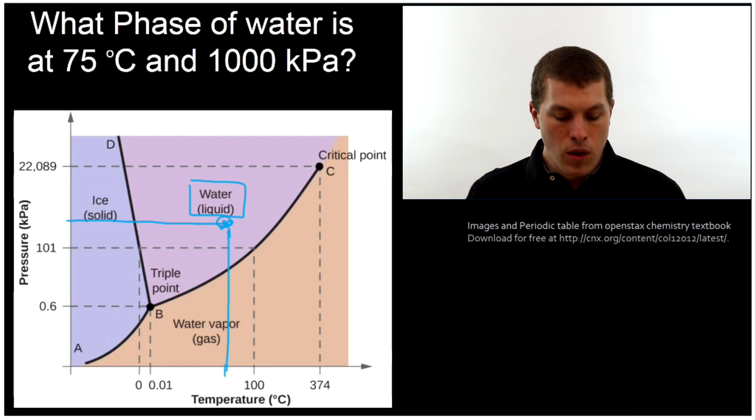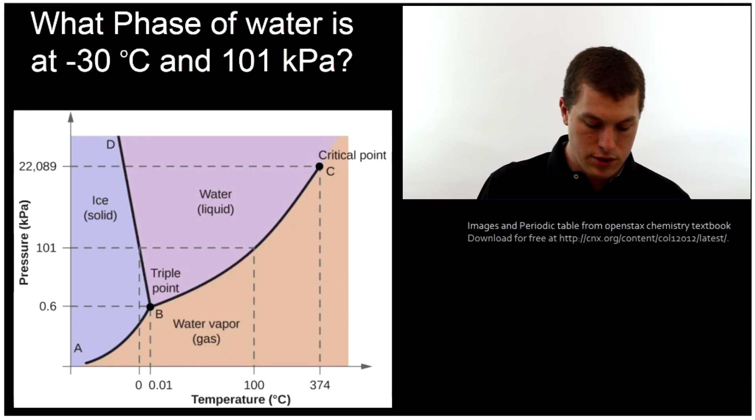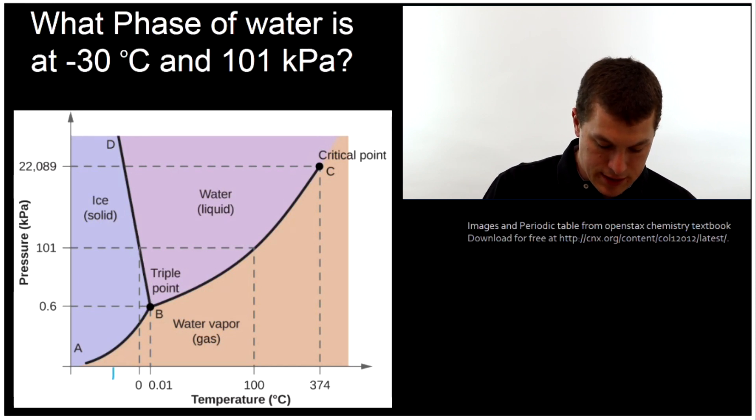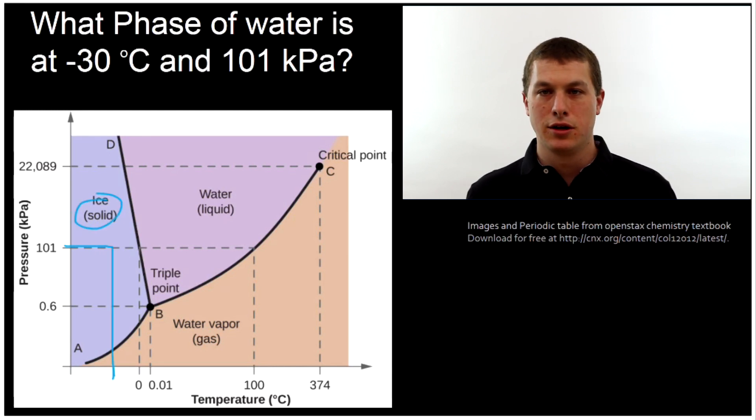All right, let's look at another one. What phase of water is present at minus 30 degrees Celsius and 101 kilopascals? Well, minus 30 degrees Celsius might be about there, and 101 kilopascals is there. And we see where those meet. Now we have solid. So this will tell us, like let's say you're going to a faraway planet and you want to know, am I going to have liquid water to drink? You can look at your phase diagram and know the pressure of the planet and the temperature of the planet and decide, is it going to be solid or is it going to be liquid? Pretty important, by the way, for investigating where life might be in the universe.